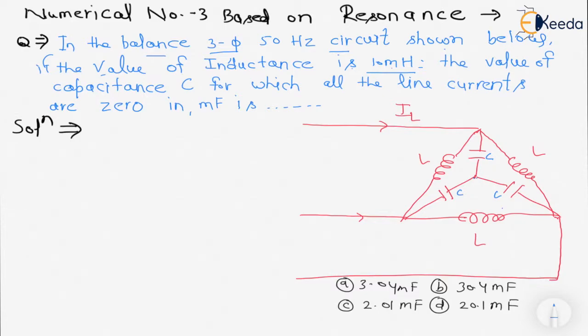Then the value of capacitance C for which all the line currents are zero in millifarad is... Here is the given circuit and here are the answers.